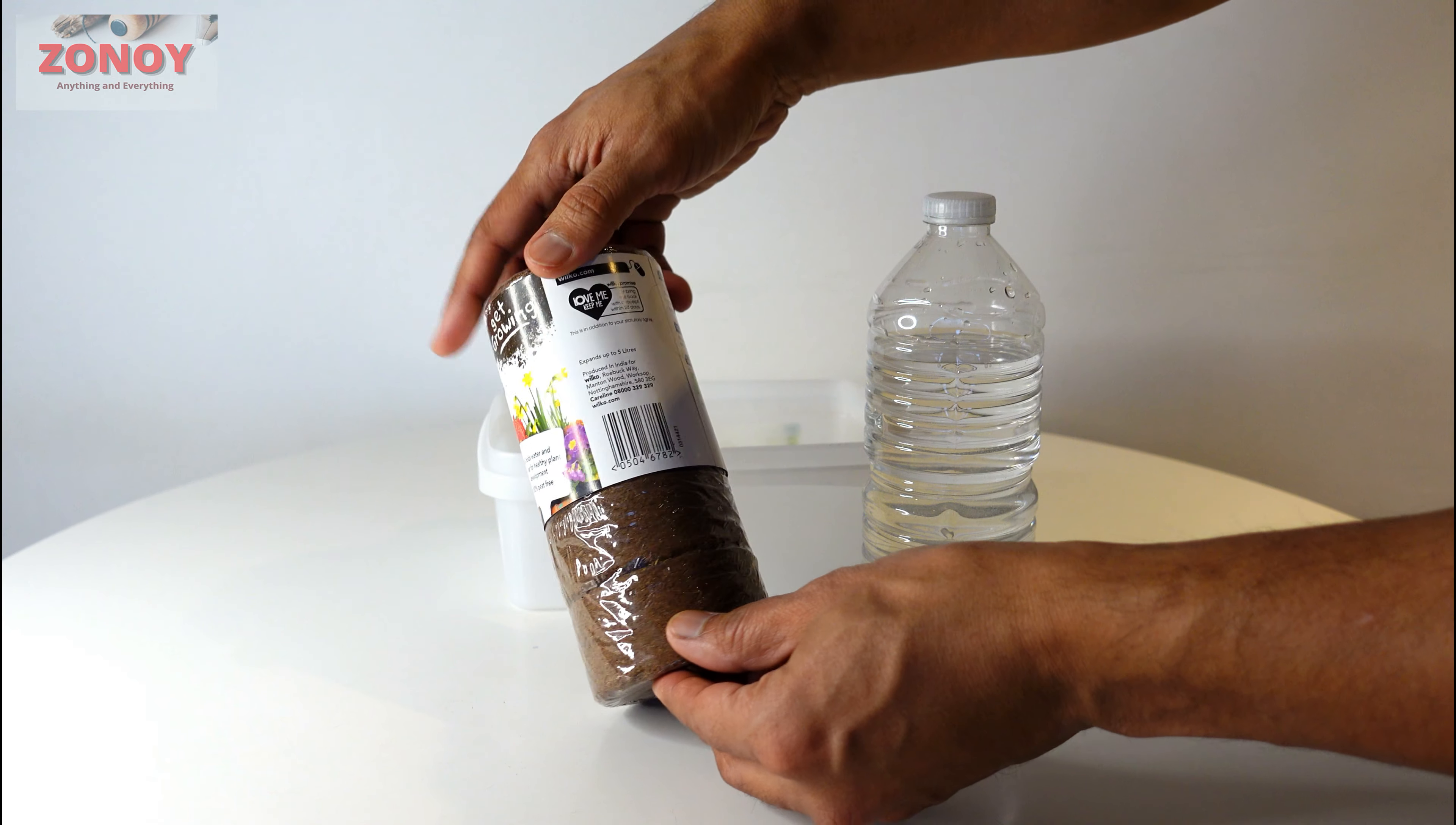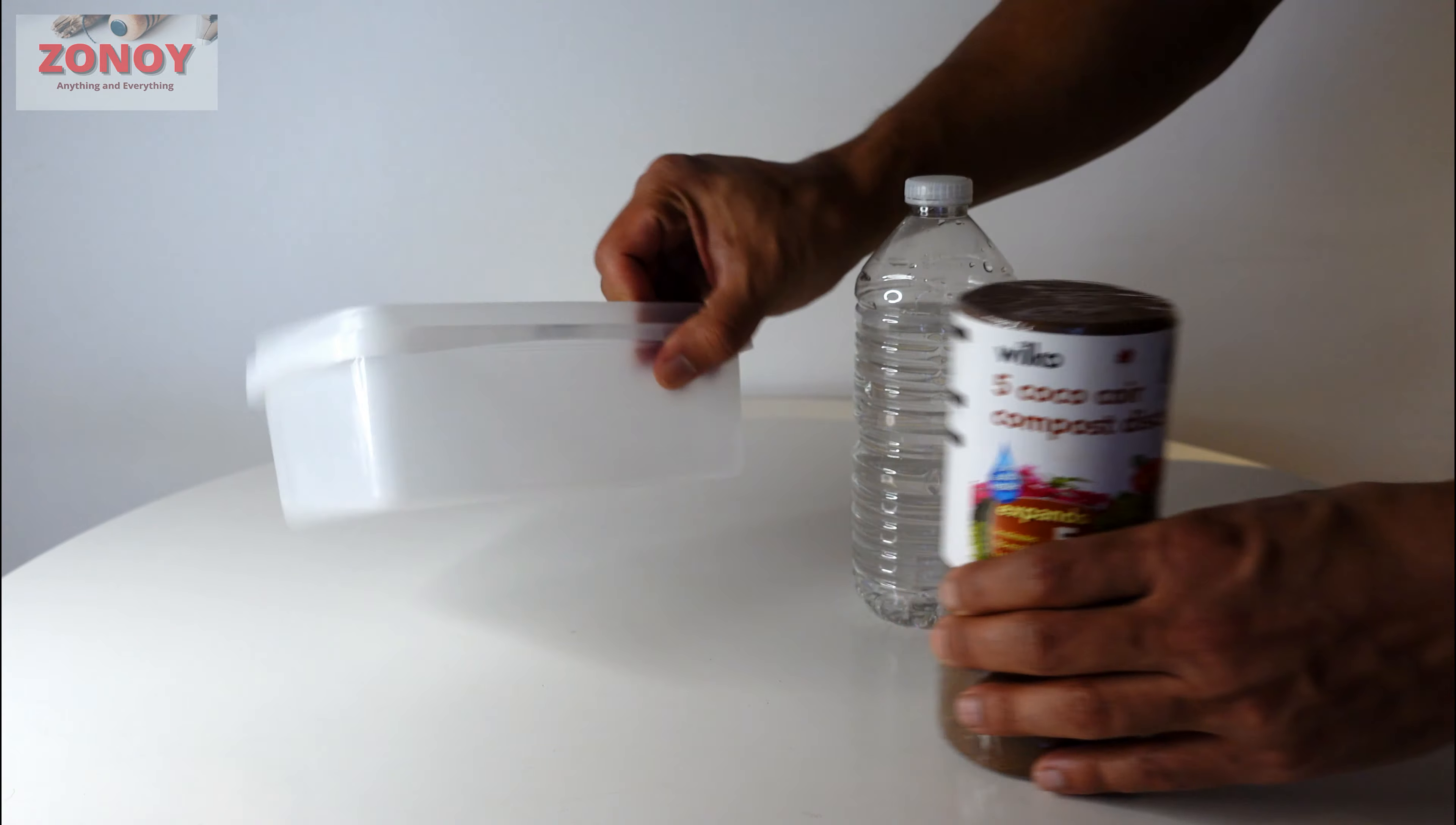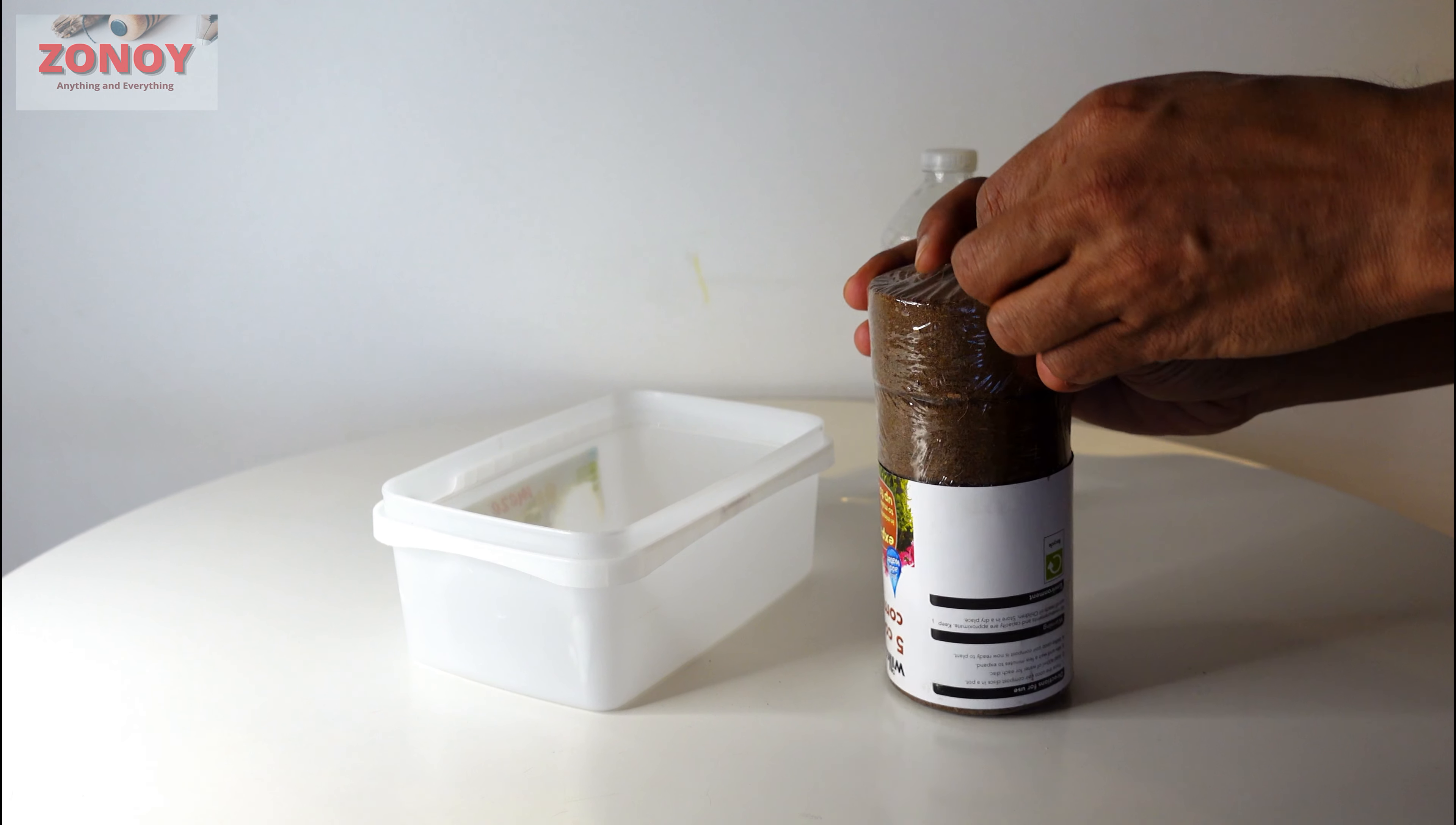In the instruction it says add 400 milliliters of water and it will make one liter of compost. So I'm going to show you how to do that. So we've got a container, old container and I've already measured it and I know that's 500 milliliters water. So I've got it only up to here and we are going to open this.